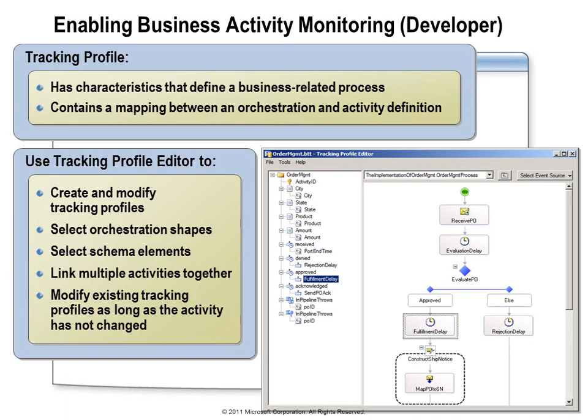Once the definition is deployed, it's up to the developer to configure the interceptors using the Tracking Profile Editor to collect the data values specified in the BAM activity. When you open the Tracking Profile Editor, you will be able to load any of the BAM activity definitions that have been deployed to the BizTalk management database, and then you'll be able to select from the various components within your application — whether those are receive or send ports or orchestrations. You can specify which component should report each of the business activity items by simply dragging and dropping the business activity item onto a component. For example, if you want the ID of an order to be collected by the receive shape in your orchestration, you simply drag the order ID node from the business activity definition and drop it onto the receive shape.